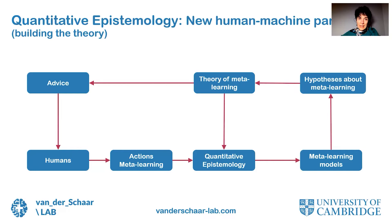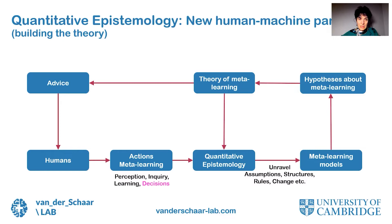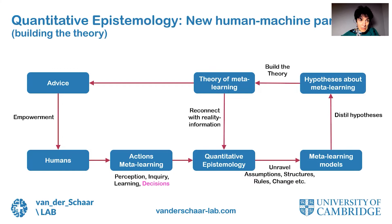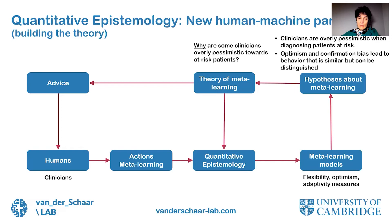Epistemology is the study of knowledge and quantitative refers to things that can be measured. So let us see what we can do with quantitative epistemology to enable the new human-machine partnership. First, we can build the theory that Mottsley is talking about for doing meta-learning for humans. Humans act and perform meta-learning — perception, inquiry, learning, decisions — and quantitative epistemology can extract from this information assumptions, structures, rules, and changes, and distill hypotheses about meta-learning. We can in this way build a theory of meta-learning, which can then be reconnected with reality information from the environment and improved continuously. On the basis of this theory, we can generate advice for humans that can empower them, enabling them to grow and improve their abilities to perform meta-learning as well as take better decisions.